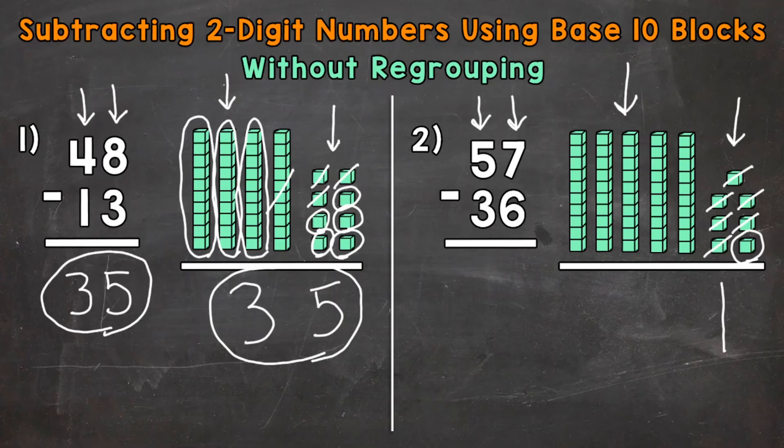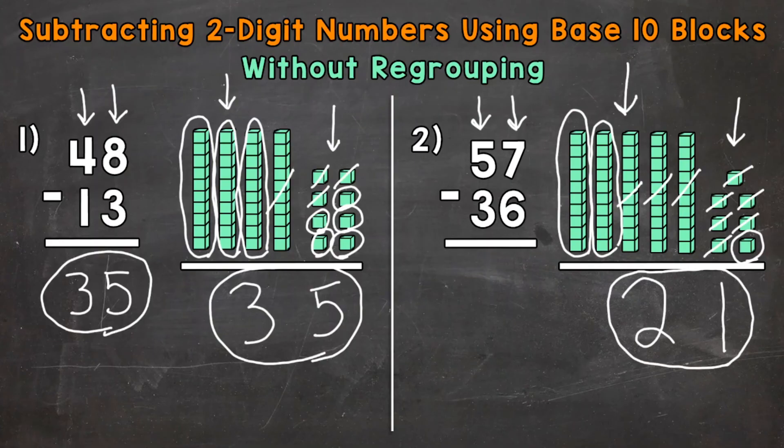Now for the tens. We have 5 tens minus 3 tens. So let's take away or subtract 3 tens: 1, 2, 3. How many do we have left? 1, 2. So we put a 2 in the tens place in our answer, and we get an answer of 21.